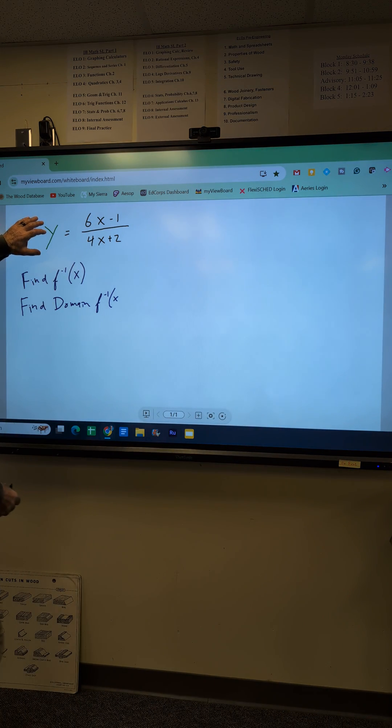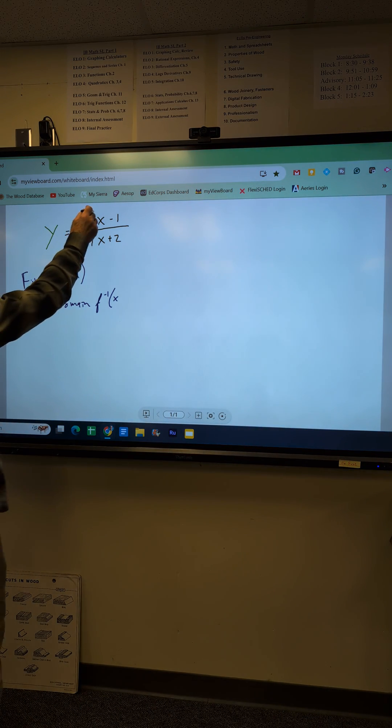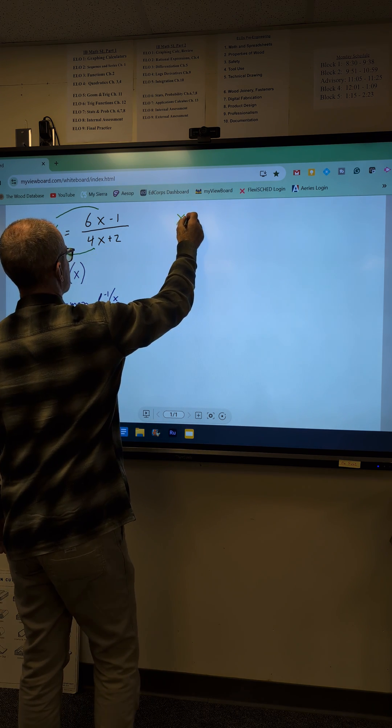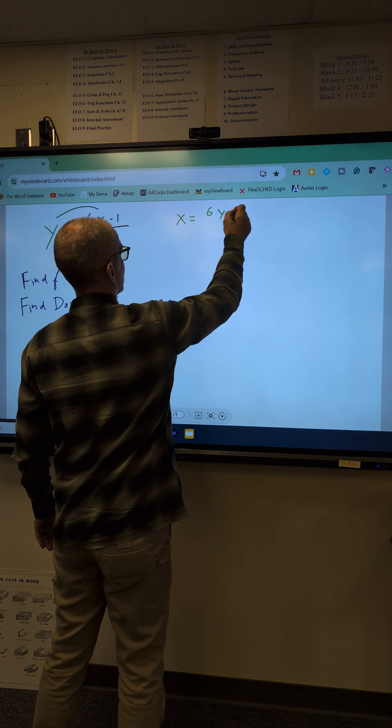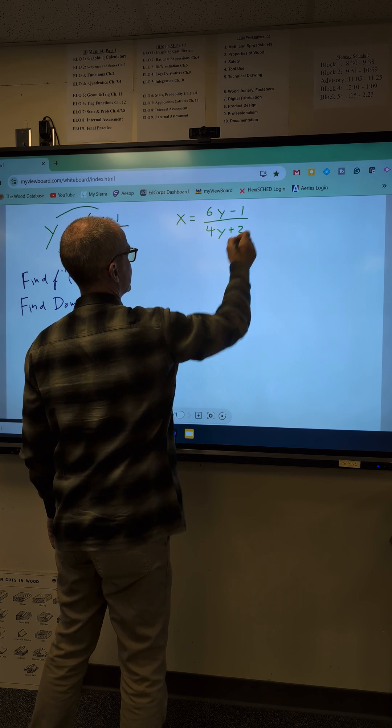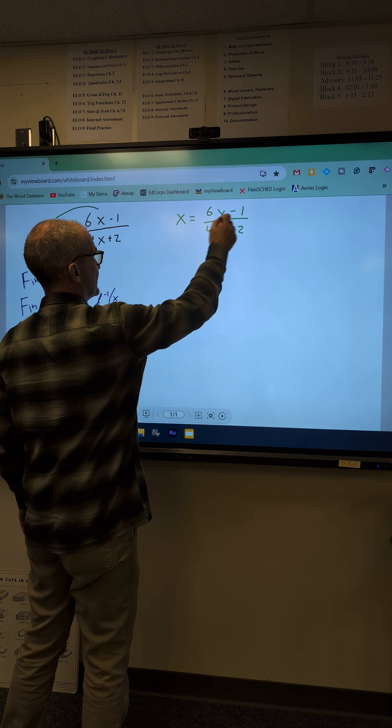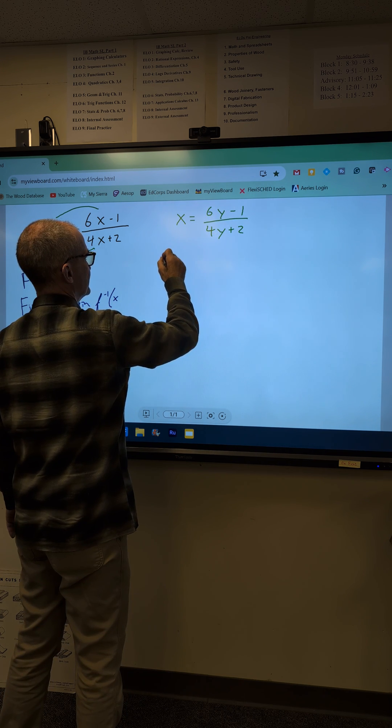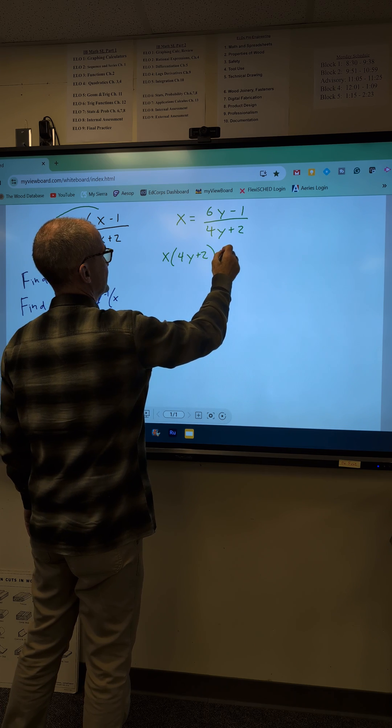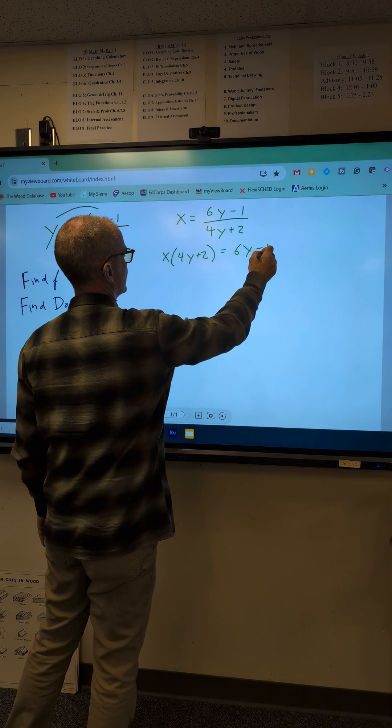So f of x and y are the same, the way I find the inverse is I swap my x's and y's to give me x equals 6y minus 1 over 4y plus 2. Solving for y, I'm going to cross multiply this times that, give me x times 4y plus 2 is equal to 6y minus 1.